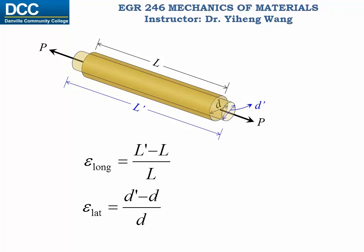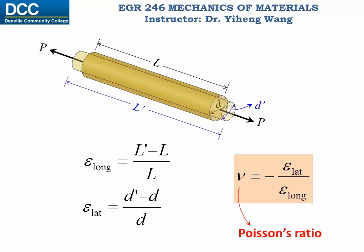The Poisson's ratio for this material, nu, is defined as negative epsilon lateral over epsilon longitudinal. Since in this case epsilon longitudinal is positive and epsilon lateral is negative, therefore Poisson's ratio is positive.